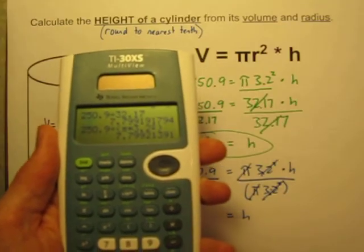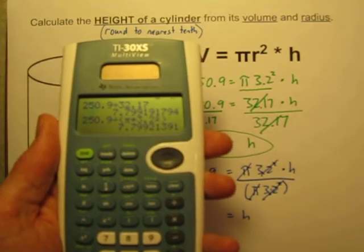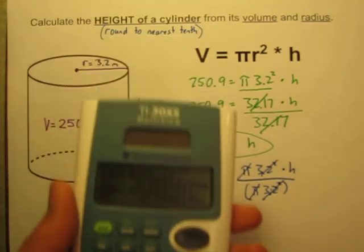I hope you can see these numbers in the calculator screen. I get 7.799, which still, rounded to the nearest tenth, is 7.8.